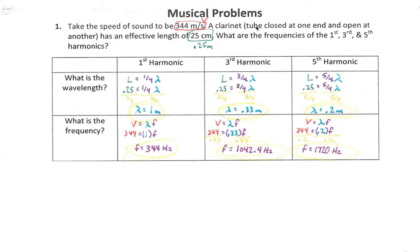This clarinet is considered to be a tube that's closed at one end, open at another end, and it has an effective length of 25 centimeters. And we want to figure out the frequencies of the first, third, and fifth order harmonics. Alright, so first of all, we should probably make sure all of our units match up. Our velocity unit here has a distance component of meters, and our length of the tube is in centimeters, so we probably want to get those to match. We could change this to centimeters a second, but that would be a little bit weird, so we'll change this 25 centimeters into 0.25 meters.